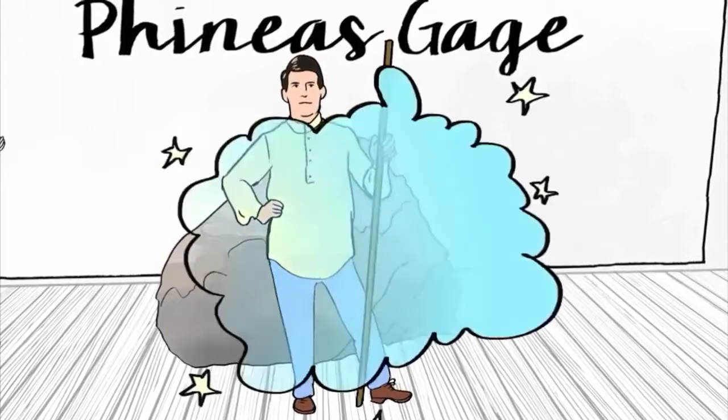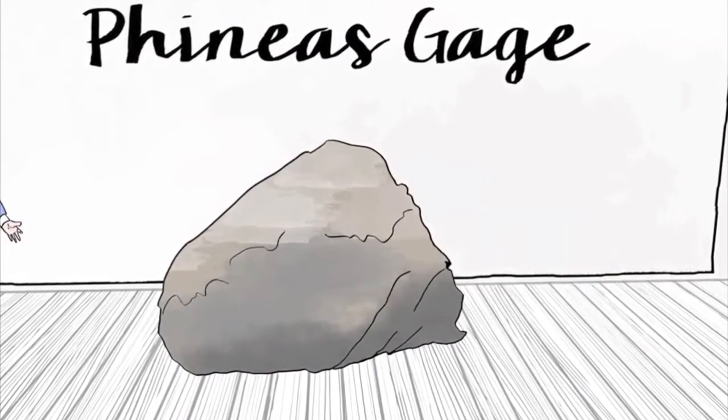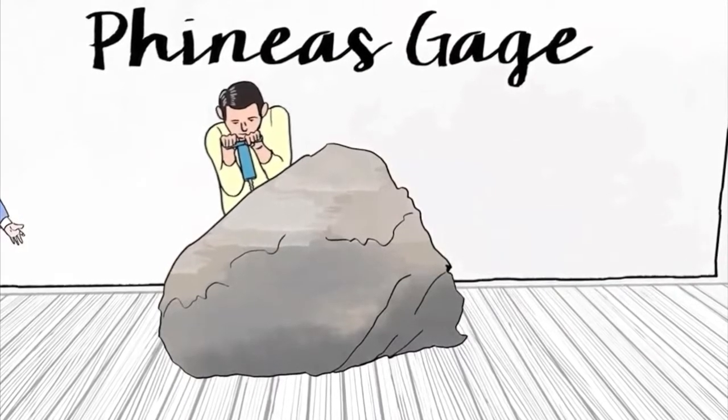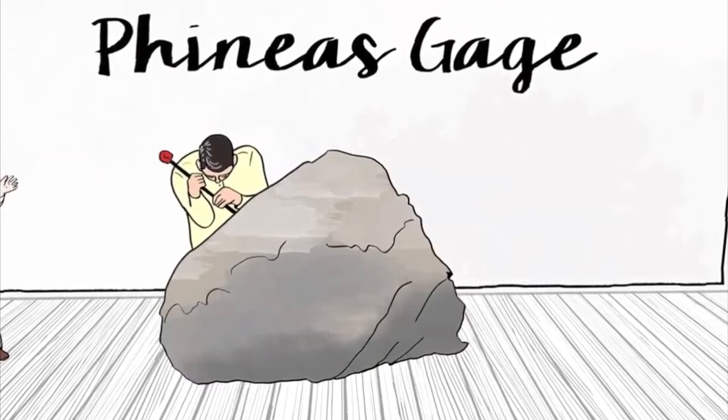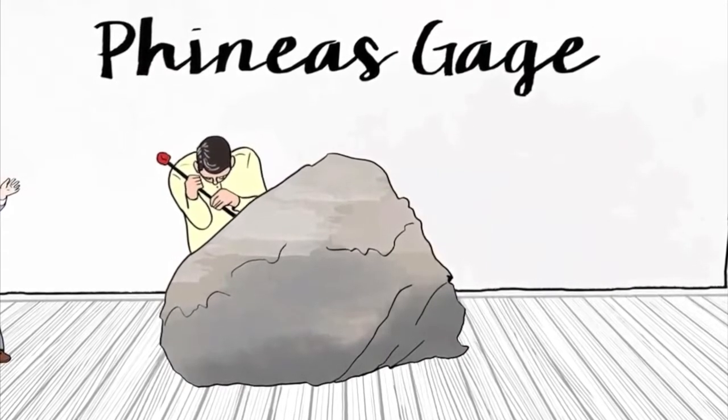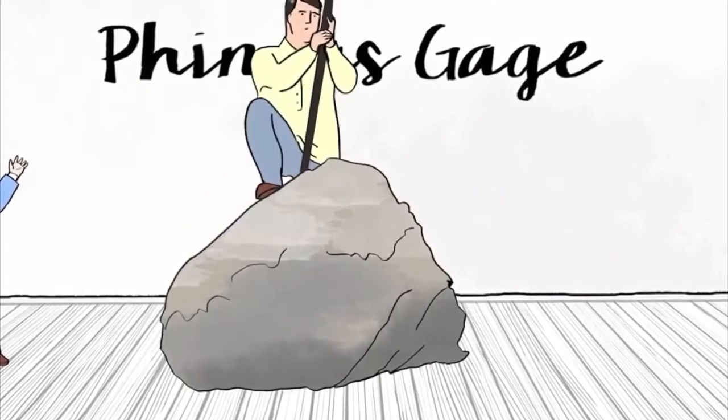Gage was a blasting foreman working on a railway construction project and his job at the time was to clear away rocks so that they could lay down tracks. To do so, his routine during those days was that he would bore a hole in the rocks, inside the hole he put blasting powder and a fuse in.